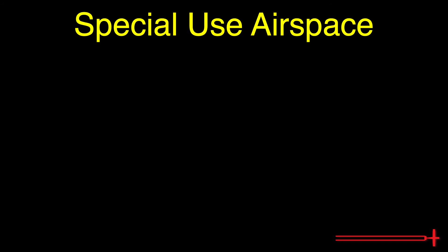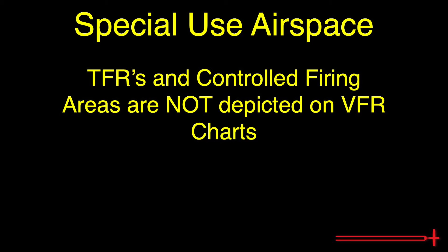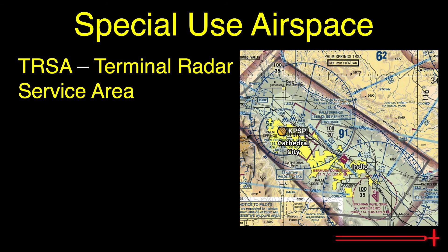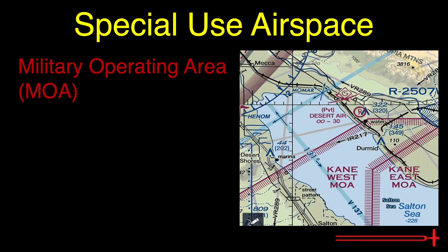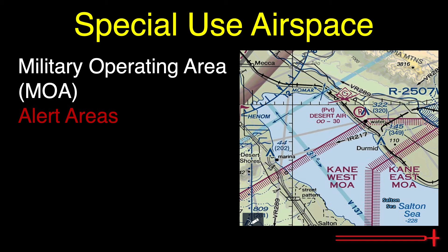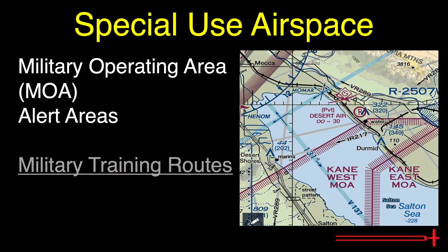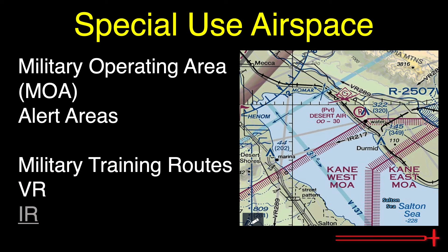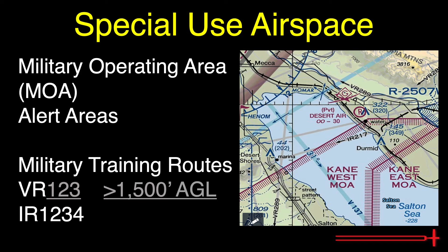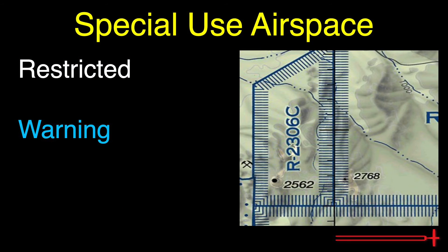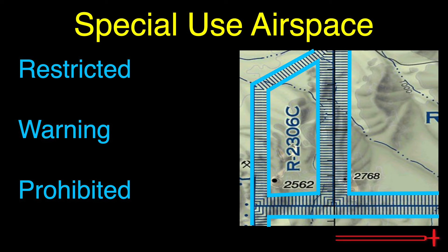Moving on to special use airspace — temporary flight restrictions and controlled firing areas are not depicted on sectional and TAC charts. TIRSAs, or terminal radar service areas, are depicted outlined in black, such as the one surrounding Palm Springs. Military operating areas are depicted by a red striped pattern. Alert areas are charted the same way but marked with an A rather than MOA. Military training routes are depicted by thin grayish lines, shown as either VR or IR followed by a three or four-digit number. VR routes are performed under visual flight rules and IR under instrument flight rules. Routes with a three-digit code run above 1,500 feet AGL, while four-digit codes are performed below 1,500 feet AGL.